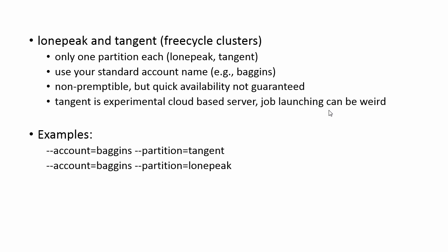We also have two other clusters which are simply FreeCycle clusters: Lonepeak and Tangent. They only have one partition each — Lonepeak and Tangent — and you use your standard account name for those. These are non-preemptible clusters, but quick availability is not guaranteed; it's kind of first-come, first-serve within reason. You should also know that Tangent is an experimental cloud-based server, so launching your jobs can be a little bit different. Here's an example of how you would set up your account and partition for those as well.